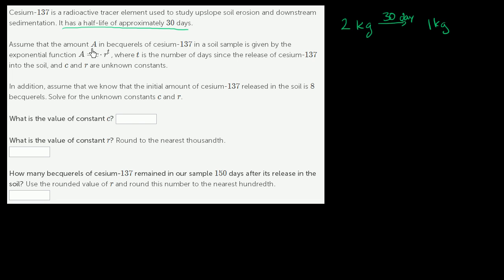Assume that the amount A in becquerels of cesium-137 in a soil sample is given by the exponential function A is equal to C times R to the T, where T is the number of days since the release of cesium-137 into the soil, and C and R are unknown constants.